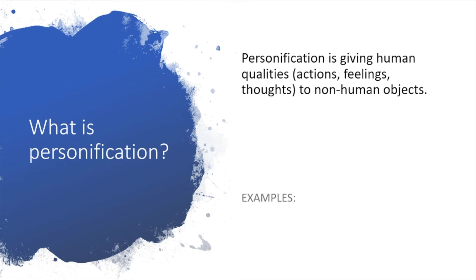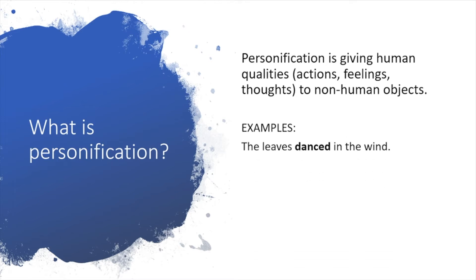Let's look at some examples. The leaves danced in the wind. Now leaves don't actually dance, right? Dancing is something that humans do. But by saying the leaves danced in the wind, it means they're moving in the wind. It gives the reader some kind of image where they can picture the leaves and how they move in the wind.